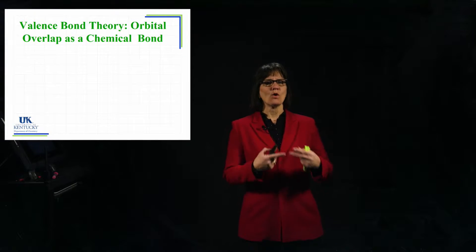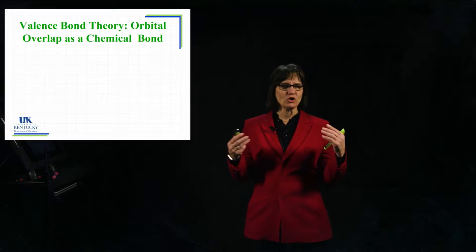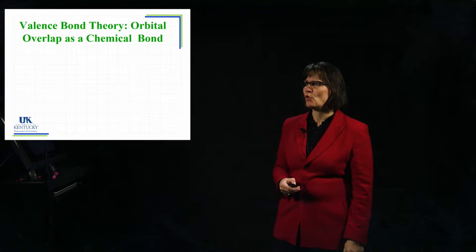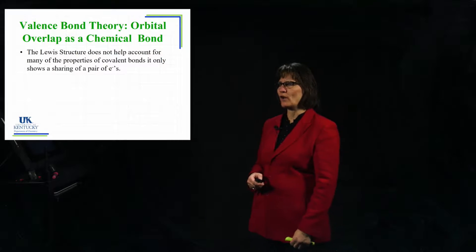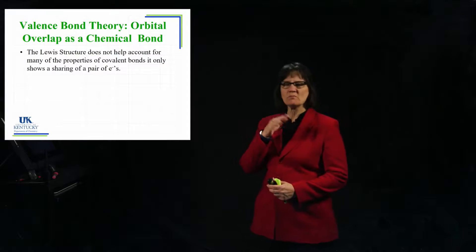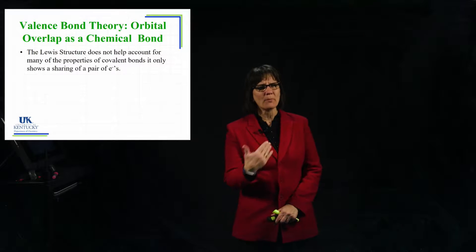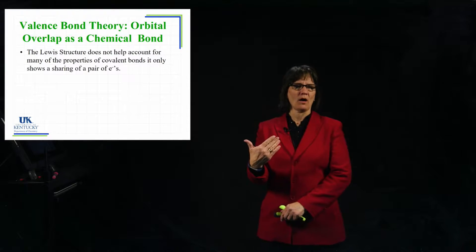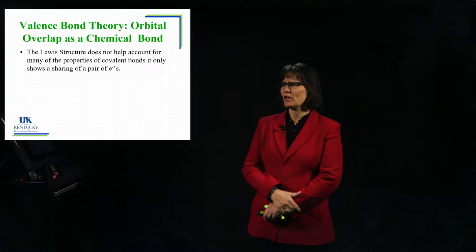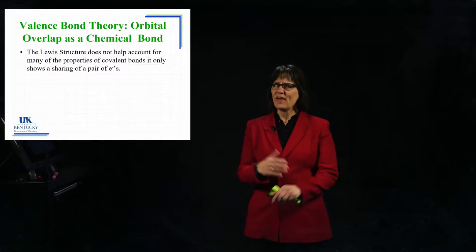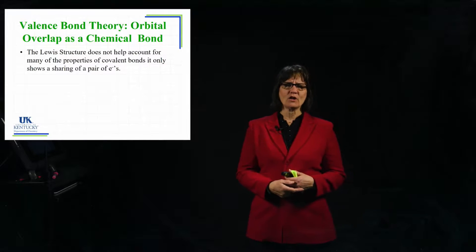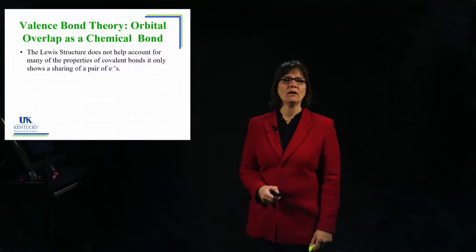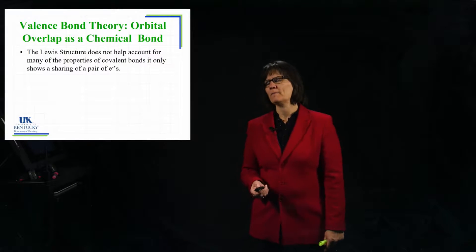This is what valence bond theory is all about — it is looking at how atomic orbitals overlap to form bonds. The Lewis structure doesn't help us account for some of the properties that we see in covalent bonds. We can just see electrons being shared, we call that a bond, and that's the end-all and be-all of that theory.